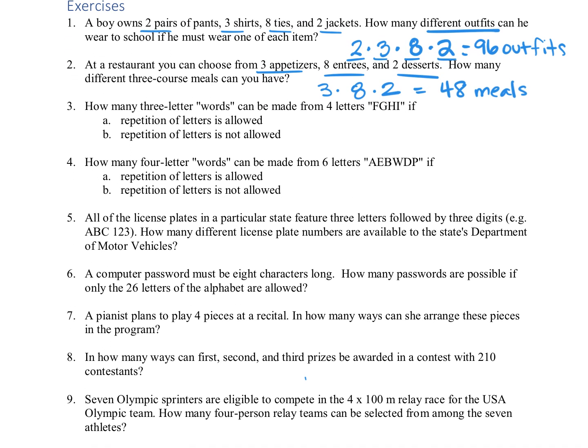For number three, we're looking at how many three-letter words can be made using only the letters F, G, H, and I. Now we don't need to actually find out what those words are, and it has words in quotes just because really it's just talking about rearranging those four letters. I'm going to put three little spots, because it's a three-letter word, and there are four ways to choose the first letter, four ways to choose the next one, and four ways to use the next one. So that's going to give us a total of 64 different words. But that was if repetition was allowed.